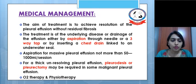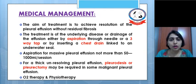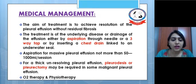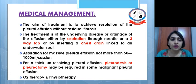For thick, unresolving pleural effusion, surgical options like pleurodesis or pleurectomy may be required, especially in malignant pleural effusion. Oxygen therapy is also indicated, and physiotherapy should be carried out alongside these medical management approaches.